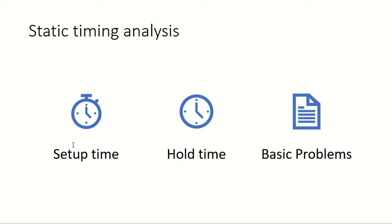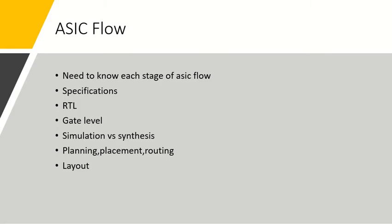The next topic is ASIC flow. You should be clear about the ASIC flow — what are the stages in the ASIC flow — and you should know the basics of each stage: what is RTL, what is gate-level netlist, what is simulation, what is synthesis, what is floorplanning, placement, routing, and what is layout.